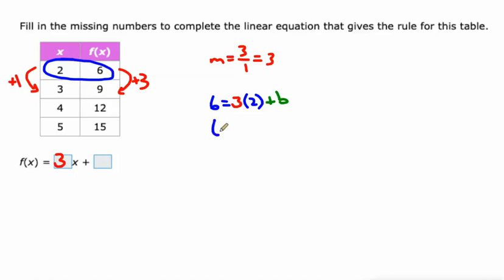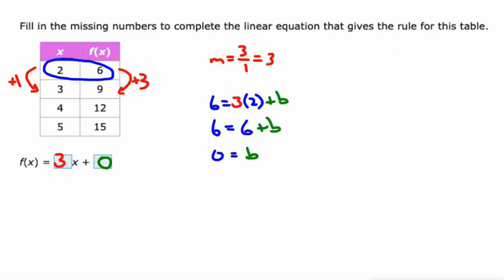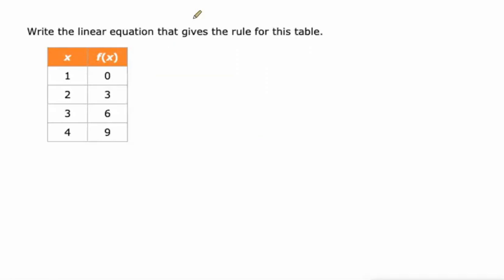And I'll multiply. 3 times 2 is 6. And then I'll subtract 6 from both sides. 6 minus 6 is 0. So our b value is 0. So normally, if I were writing this equation, I would just leave this as f of x equals 3x. I wouldn't include the plus 0. Just like on the previous one, I would just leave this as f of x equals x minus 4. I wouldn't bother with the 1.